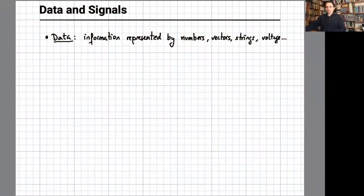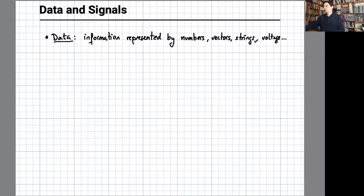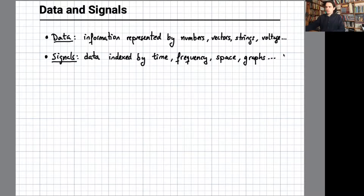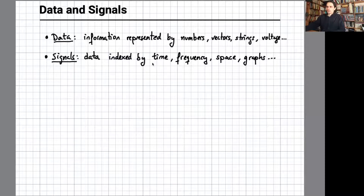We have two ingredients to discuss today. One is data, the other is prior knowledge. Data is a broad concept that comprises essentially whatever information that can be represented by numbers, vectors, matrices, images, strings, text, voltage, acoustic pressure, whatever. Signals is a word typically reserved for data that are indexed by a variable that quantifies time, frequency, or space.